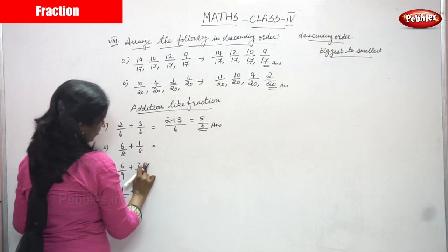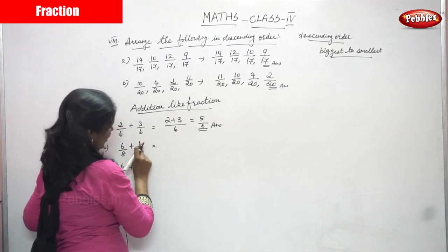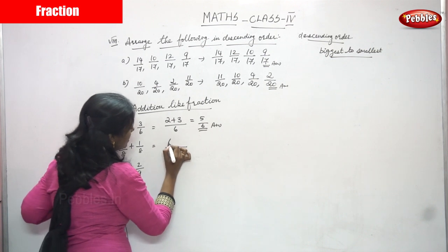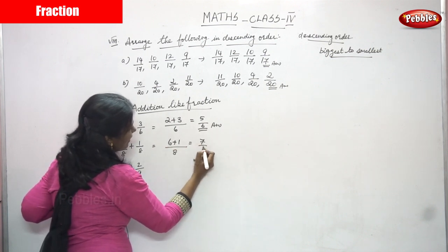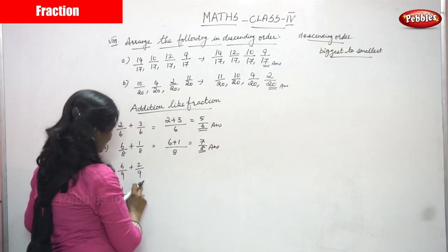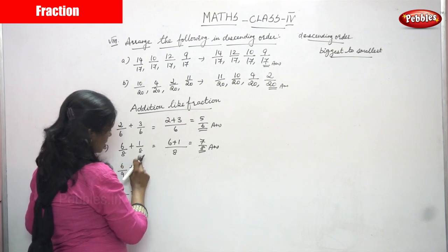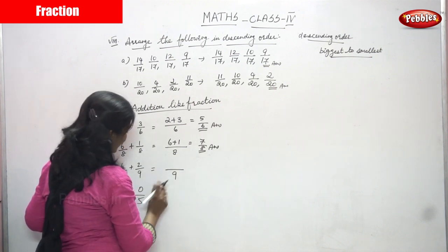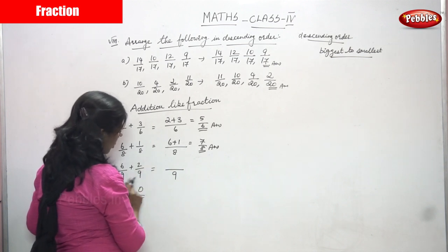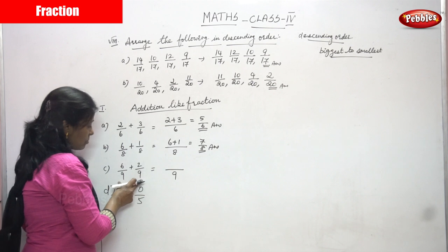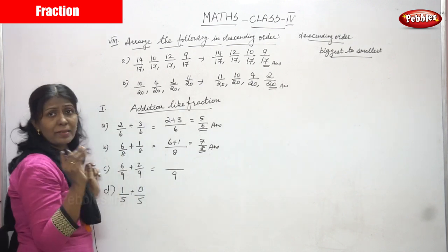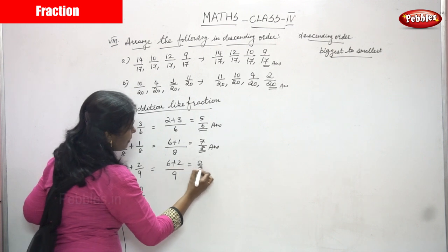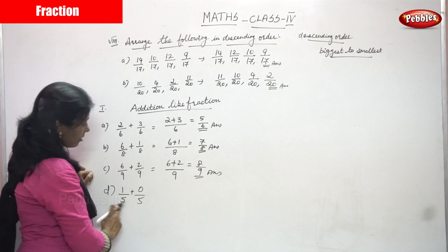Next: 6 by 8 plus 1 by 8. Denominators are the same, so write the denominator once and add the numerators. 6 plus 1 gives 7, so the answer is 7 by 8. Next: 6 by 9 plus 2 by 9. Denominators are the same in both fractions, so add the numerators: 6 plus 2 gives 8, so the answer is 8 by 9.